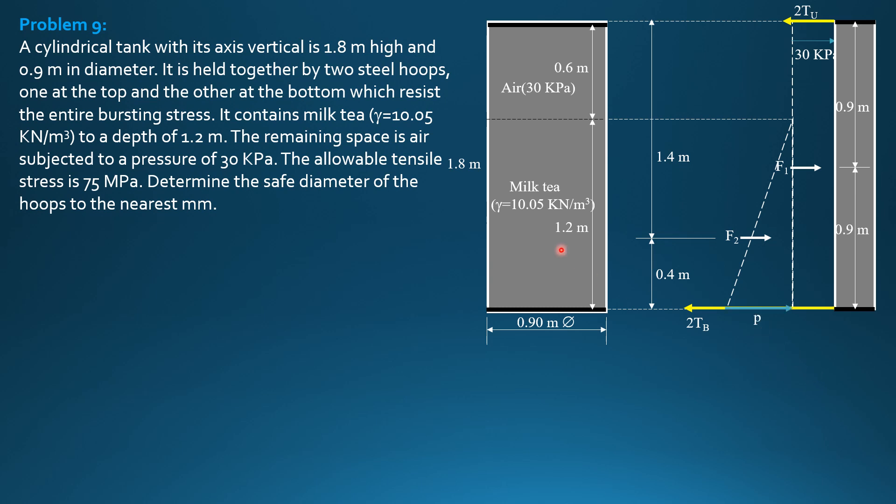P is specific weight of milk tea times 1.2. 10.05 times 1.2 is 12.06 kilopascals. F1 therefore is equal to volume of this pressure diagram. So 30 times 1.8 times perpendicular to the board 0.9 equals 48.6 kilonewtons. F2 is 0.5 of 12.06 times height 1.2 times perpendicular to the board 0.9, so F2 is 6.512 kilonewtons.